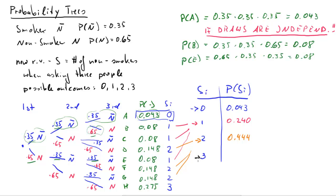And the last one, last outcome three, there is only one branch. And the probability of that branch is 0.275. Of course, all these probabilities will add up to one.